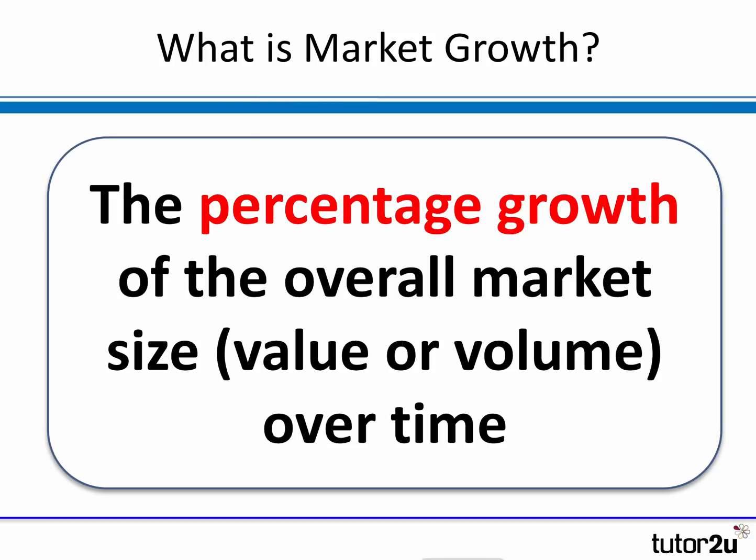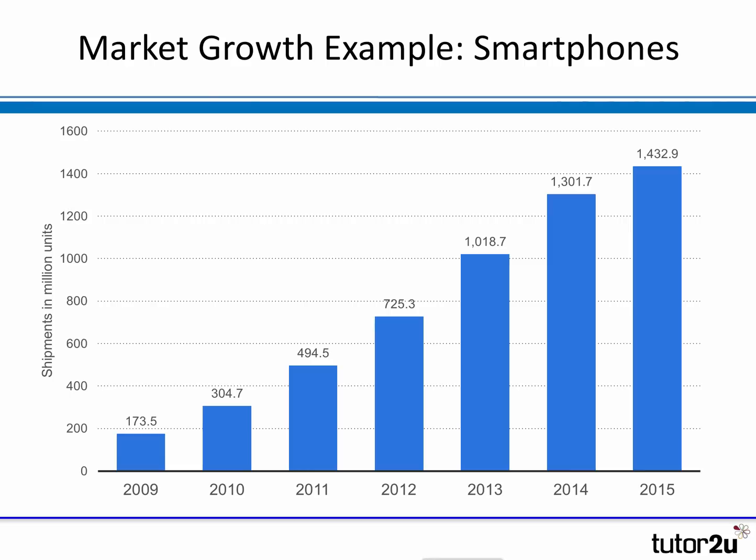Don't forget that the market can also be measured in different ways. It could be measured in terms of the total value of sales, for example, or it could be the total value of profits. A common way of looking at market size is to look at the volume of products sold in the market between one period and another. Here are a couple of examples to illustrate how markets grow over time or decline in value and volume.